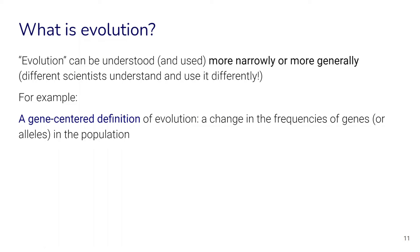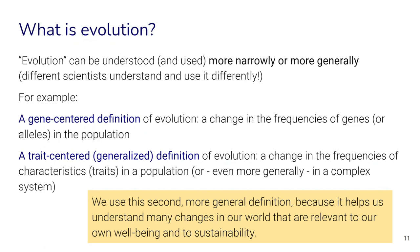We'll be using this second, more general definition. It doesn't mean we don't talk about genes — genes are quite important and one source of information within evolution — but our trait-centered model will allow us to think about evolutionary changes in our world that are relevant to our own well-being and to sustainability.